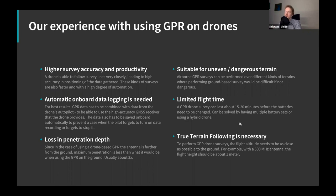We also discovered that true terrain following is necessary when flying these missions, because standard AGL data is often not accurate enough — especially in harsh locations with snow and ice where conditions constantly change. Because of this, we developed a true terrain following kit: the SkyHub computer sold together with either a laser or radar altimeter. This lets the drone follow terrain at one or two meters. These sets are currently available for DJI M600, M210, and Pixhawk-based drones.